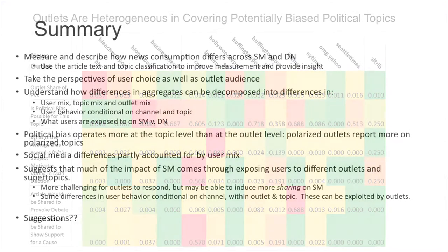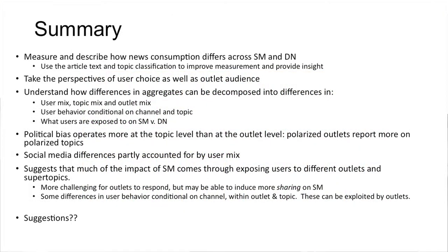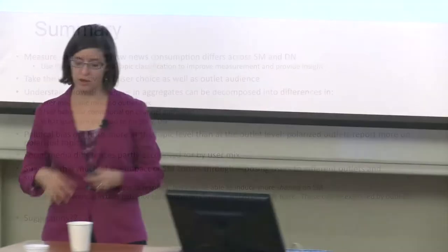To finish up: we've spent a lot of time trying to measure and describe how news consumption differs across social media and direct navigation. We have some interesting ways to try to categorize that, and some initial findings about political bias. Going forward, we're trying to find other machine learning techniques to take all our big descriptors — 50 variables about each article — and summarize them in a more parsimonious way to understand what social media does from both the user side and from the outlet response side. We're very open to suggestions. Any one of these individual topics could really use a lot more thinking.